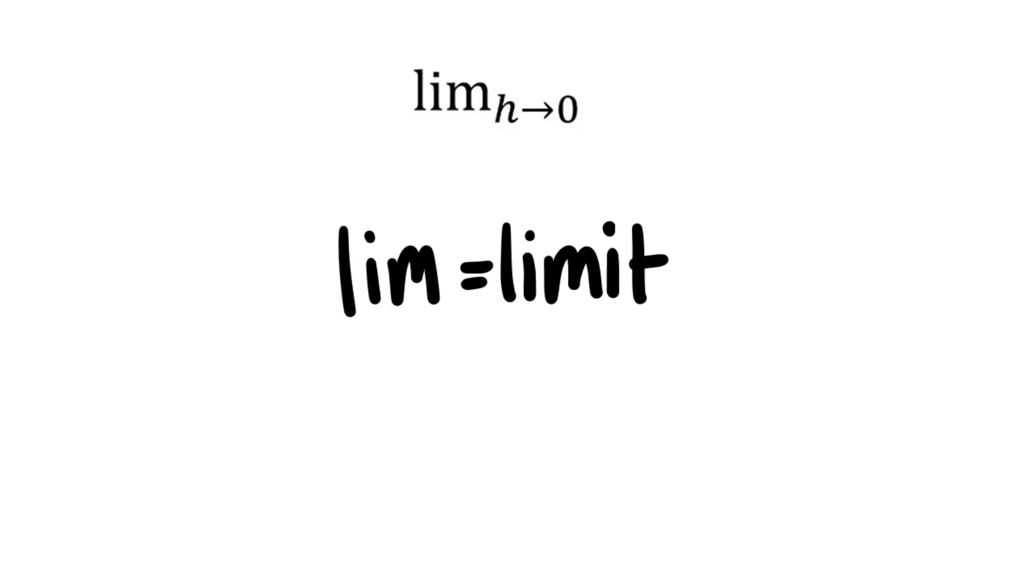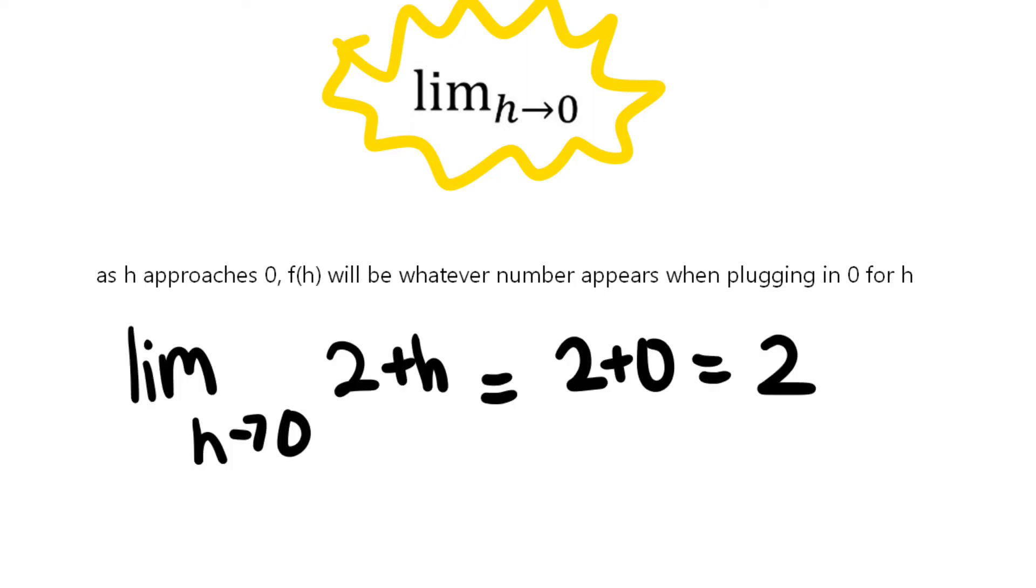Lim is short for limit. And in the limit above, it's essentially saying, as h approaches zero, y will be whatever number appears when plugging in zero. In other words, it's literally just plugging in whatever number that limit gives. Pretty easy, right?